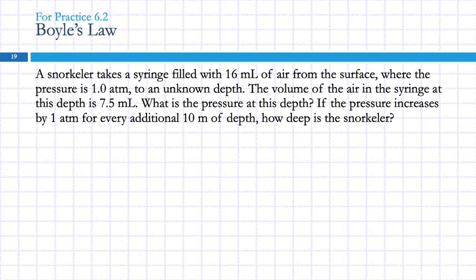Here's a critical thinking problem: a snorkeler takes a syringe filled with 16 milliliters of air from the surface where the pressure is one atmosphere, to an unknown depth. The volume of the air in the syringe at this depth is 7.5 milliliters. What is the pressure at this depth? If the pressure increases by one atmosphere for every additional 10 meters of depth, how deep is the snorkeler? We read through the problem and highlight all the numbers: 16 milliliters, one atmosphere, 7.5 milliliters, one atmosphere, 10 meters.